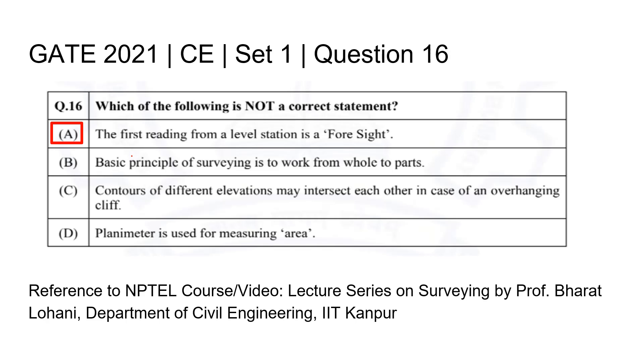After seeing all these statements, we can see that option A is incorrect, which says the first reading from a level station is a foresight. But as we discussed earlier, the first reading from a level station is a backsight. So option A is incorrect and the other three options are correct. The answer is option A.